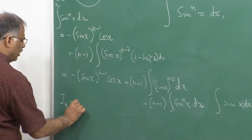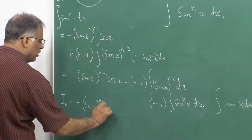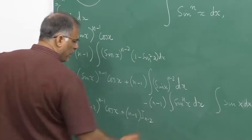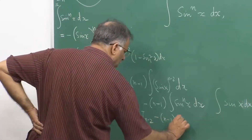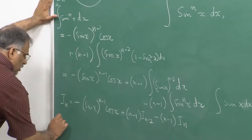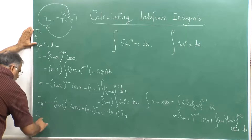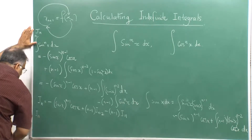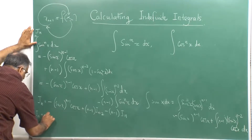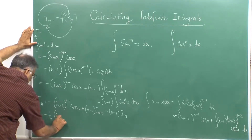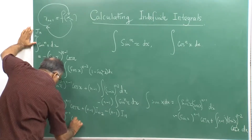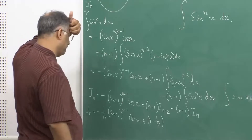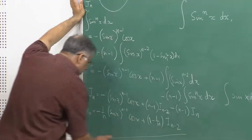Collecting the I_n terms: I_n + (n−1)I_n = n·I_n = −sin^(n-1)x · cosx + (n−1)·I_{n-2}. Dividing by n gives the recursive formula: I_n = (−1/n)·sin^(n-1)x · cosx + ((n−1)/n)·I_{n-2}. This recursive relation was important in the days when people calculated integrals by hand — it is essentially an algorithm, a feedback system where you put in I_n to get I_{n-2}.